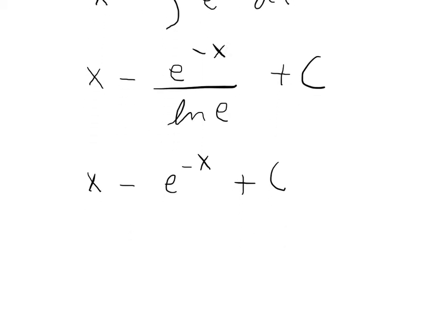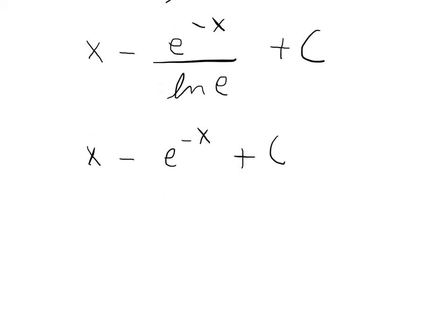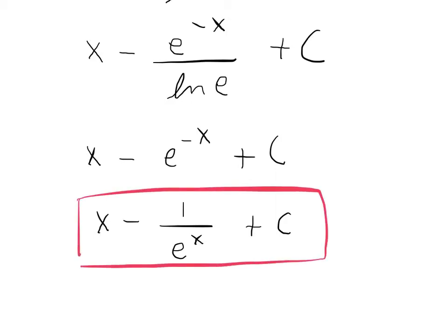And simplify that one more time to get that negative sign out of your exponent. So you're going to get x minus 1 over e to the x plus c. And that is your final answer. I'll come back next time to hear more.